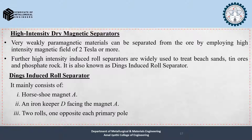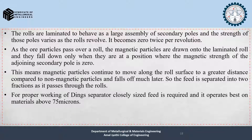The Dings induced roll separator mainly consists of a horseshoe magnet and an iron keeper facing the magnet, with two rolls, one opposite each primary pole. The rolls are laminated to behave as a large assembly of secondary poles, and the strength of those poles varies as the rolls revolve, becoming zero twice per revolution.